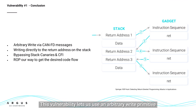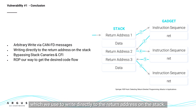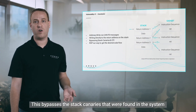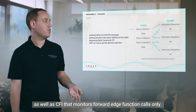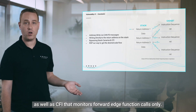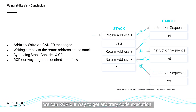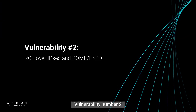This vulnerability lets us use an arbitrary write primitive via KNFD messages, which we use to write directly to the return address on the stack. This bypassed stack analysis that were found in the system, as well as CFI that monitored forward edge function calls only. Then by using return oriented programming, we can ROP away to get arbitrary code execution.